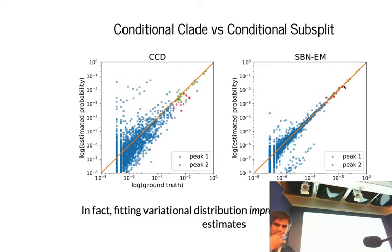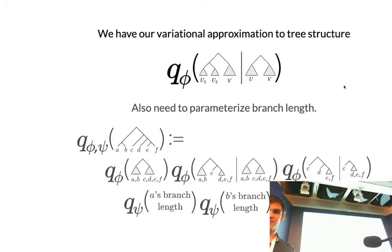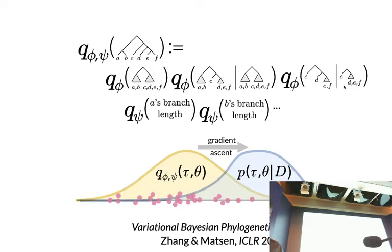In the NeurIPS paper last year, we showed that fitting this variational distribution improves MCMC posterior estimates in the sense that if we take an MCMC posterior and fit this variational distribution, that's actually closer to the true truth than just using the MCMC posterior estimates directly. It's like this amazing smoother that shares information. Now we have the ingredients we need. We have a variational approximation of tree structure, and we combine that with a variational approximation of the branch lengths. I'm not going to go into this, but let's assume we've done that. Now we have everything we need to do variational inference in phylogenetics.